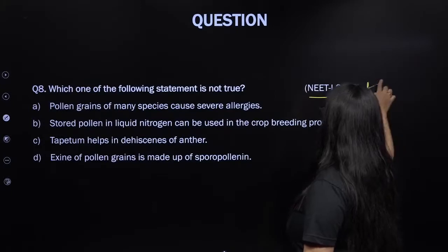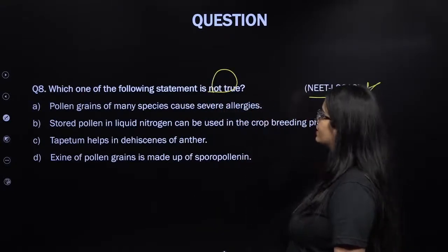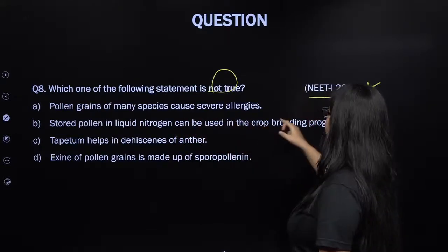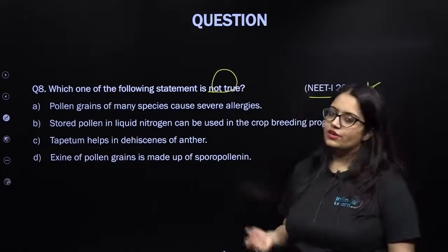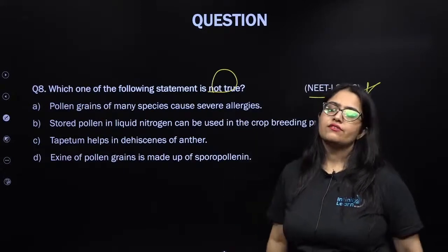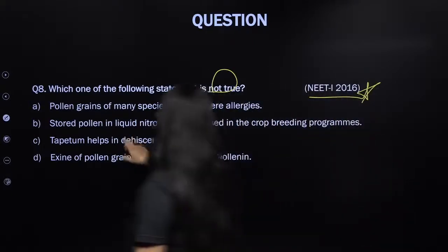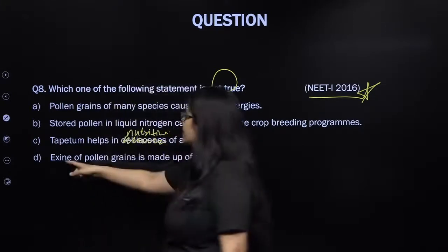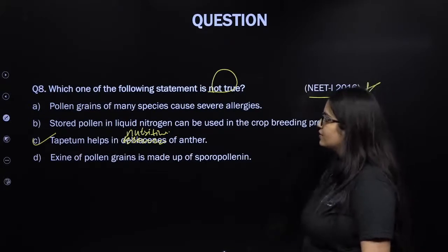From NEET Phase 1 2016, which of the following statements is not true? Pollen grain of many species can cause severe allergy — that's correct (Parthenium is the example in NCERT). Stored pollen in liquid nitrogen can be used in crop breeding programs — also correct. Tapetum helps in dehiscence of anther — NO. Anther is surrounded by four layers: epidermis, endothecium, middle layer, and tapetum. The outer three are protective and help in dehiscence. Tapetum is nutritive — it provides nutrition to developing pollen grains and does not help in dehiscence. Exine of pollen grain is made up of sporopollenin — that is correct. So the incorrect statement is that tapetum helps in dehiscence.